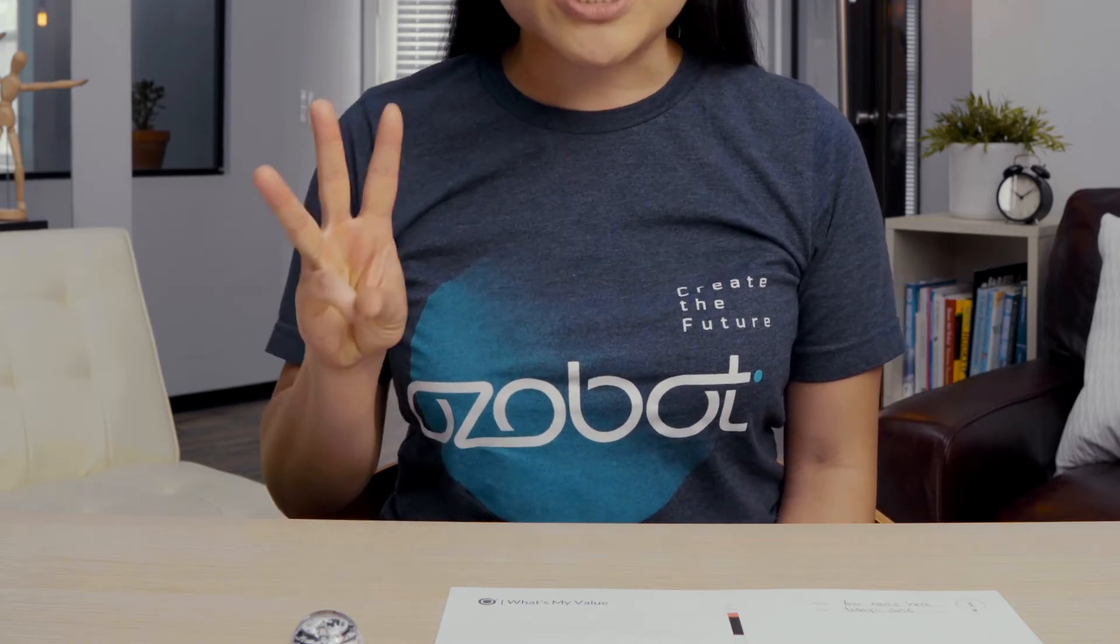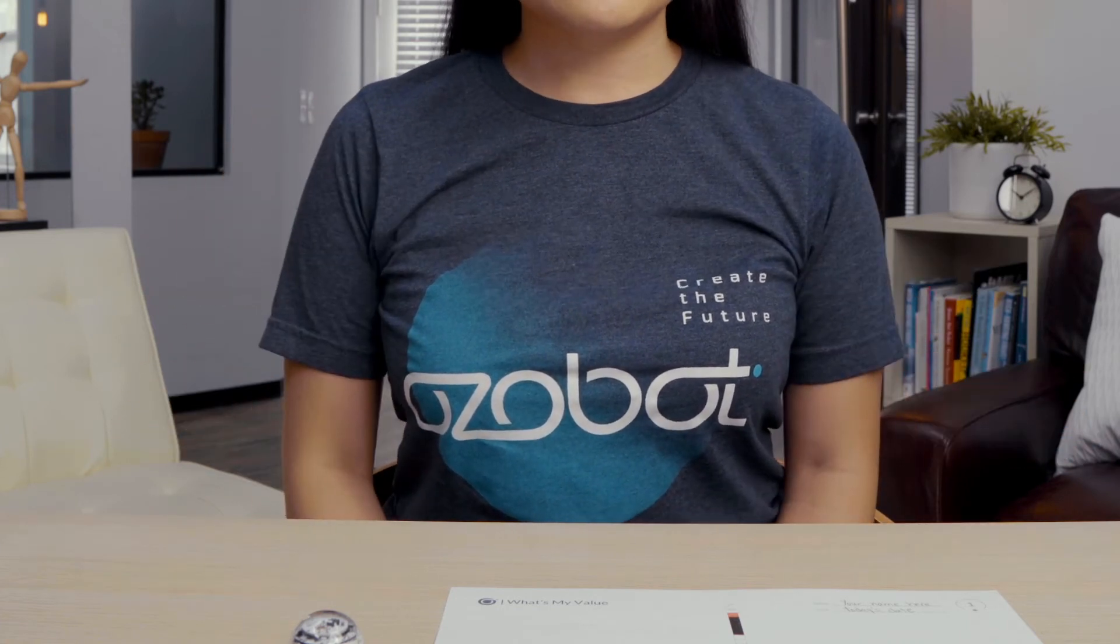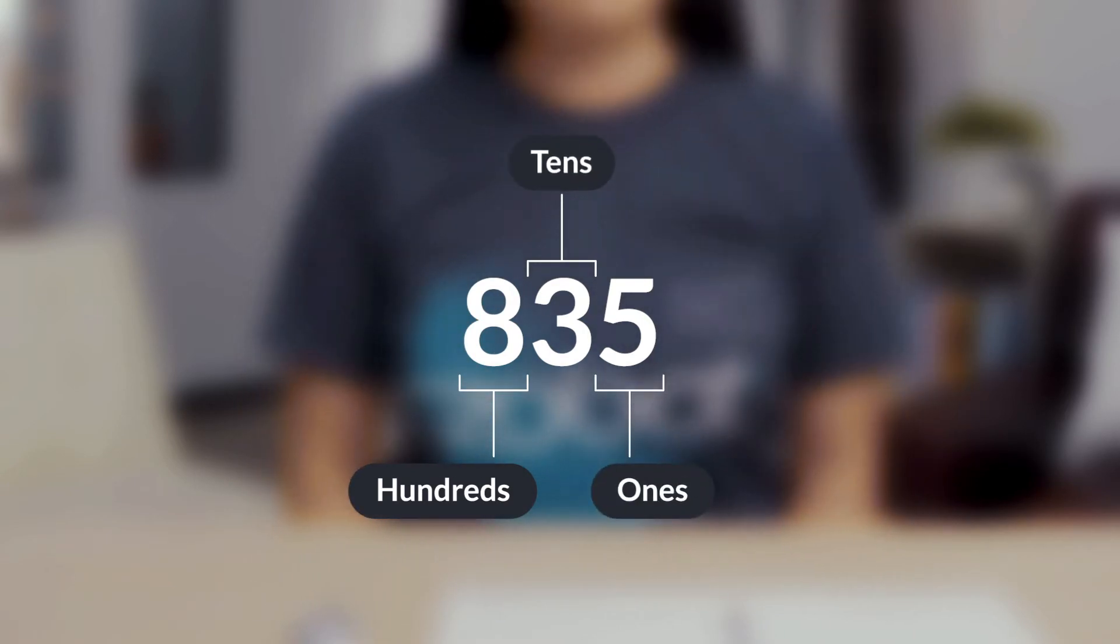In a three-digit number, the place of a number can be the hundreds, tens, or ones. Let's look at the number 835. The eight is in the hundreds place, the three is in the tens place, and the five is in the ones place.